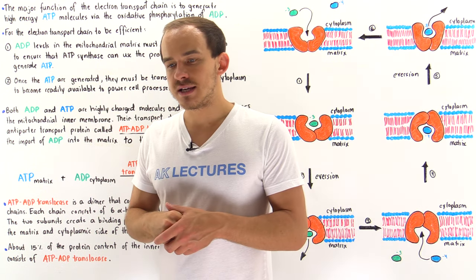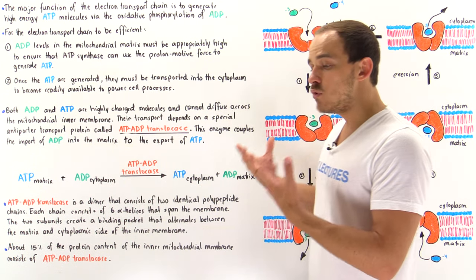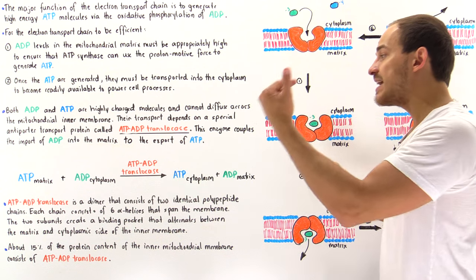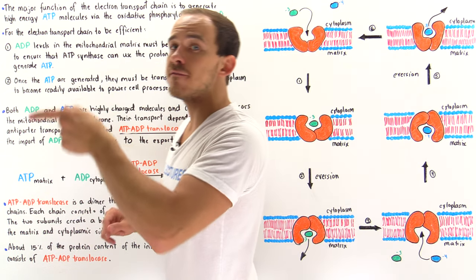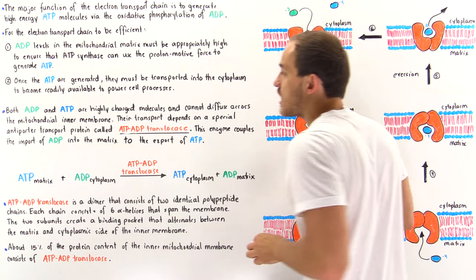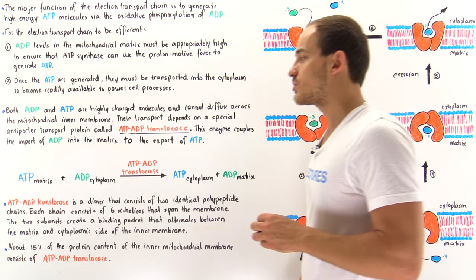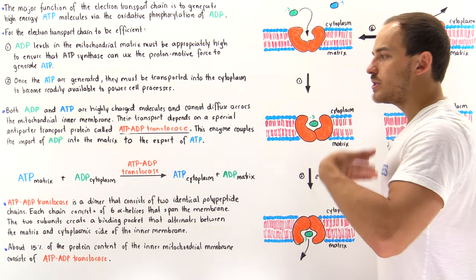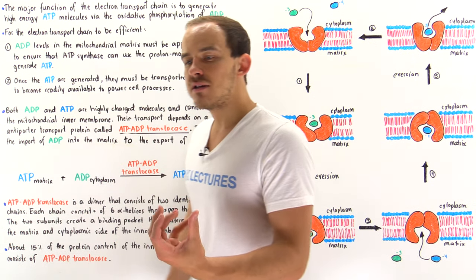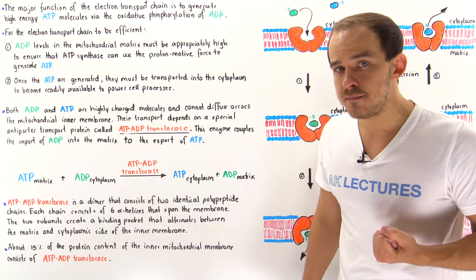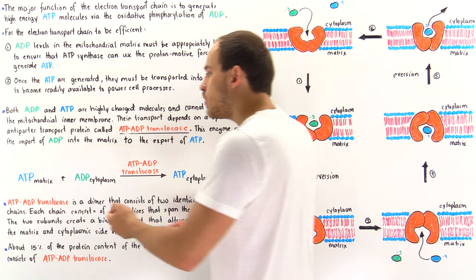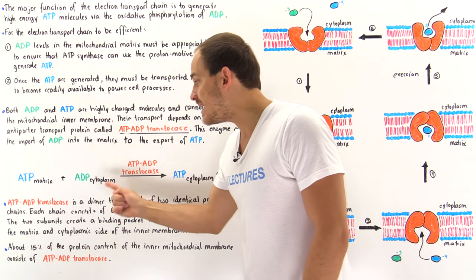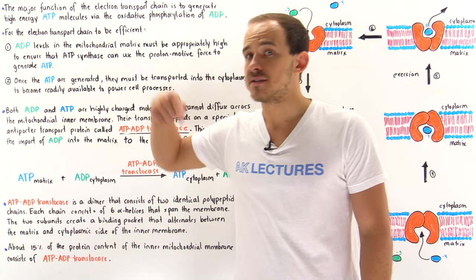This antiporter is an exchange protein molecule known as ATP-ADP translocase. What this molecule does is catalyze the movement — it couples the import of ADP into the matrix to the export of ATP out of that matrix. This is the net reaction catalyzed by ATP-ADP translocase: within the matrix, ATP molecules are generated and ADP molecules are used up.